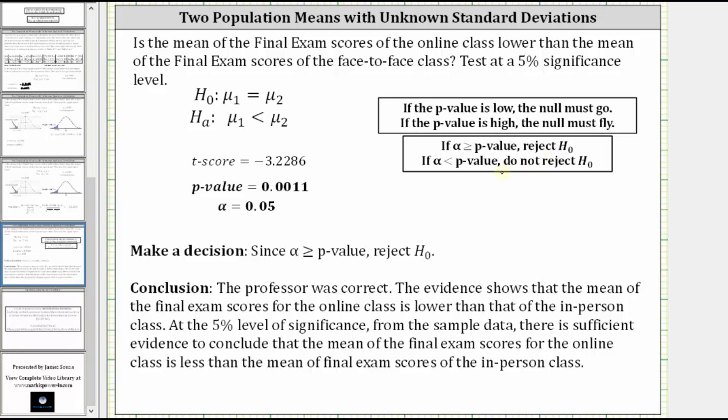In conclusion, the professor is correct. The evidence shows that the mean of the final exam scores for the online class is lower than that of the in-person class. At a 5% level of significance from the sample data, there is sufficient evidence to conclude that the mean of the final exam scores for the online class is less than the mean of the final exam scores of the in-person class.